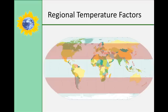Latitude means the distance from the equator. Closer to the equator is warmer; farther from the equator is colder. Earth's surface can be divided into three temperature zones: the tropical zone, two temperate zones, and two polar zones, and you can see them highlighted here.